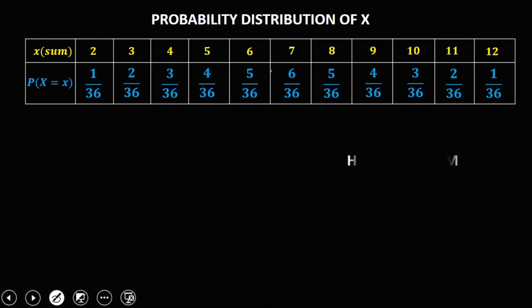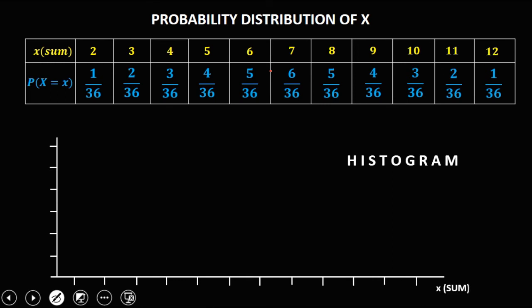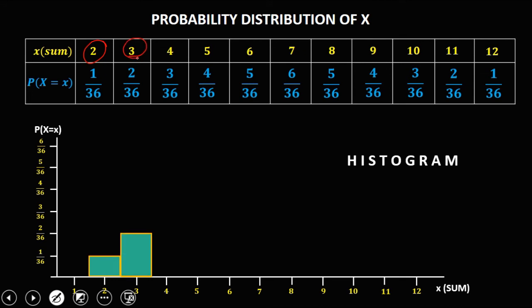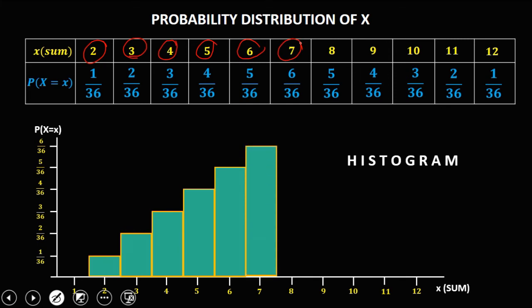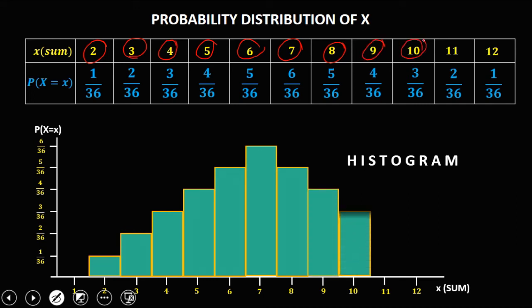To construct a histogram from this probability distribution, the horizontal axis shows X (the sum, values 2 through 12), and the vertical axis shows the probability (1/36 up to 6/36). The bar heights follow the distribution: 1/36, 2/36, 3/36, 4/36, 5/36, 6/36, 5/36, 4/36, 3/36, 2/36, 1/36 for sums 2 through 12. This is now the histogram of this experiment.